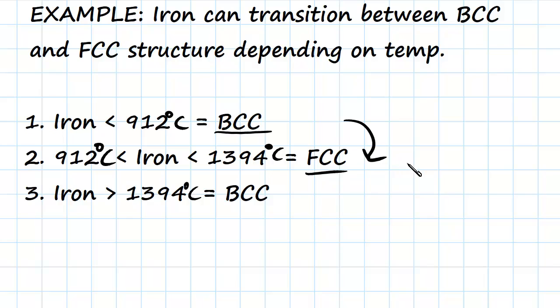And then finally, once it's over 1394 degrees Celsius, it moves back to a BCC crystalline form. So iron goes from BCC to an FCC and then back to a BCC form depending on the temperature of its surrounding environment.